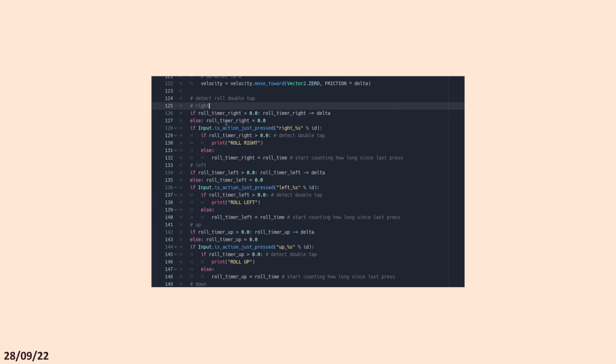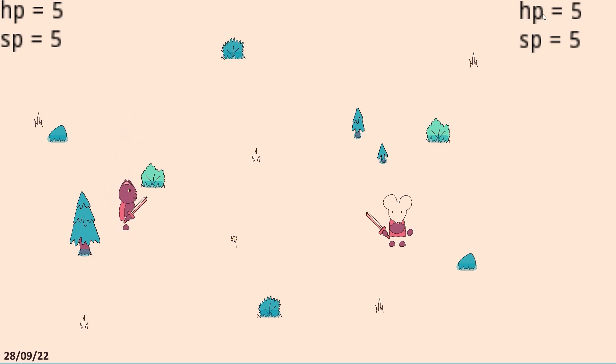I added some code to detect double taps, and implemented a roll state, which plays the roll animation, sets your velocity to a set speed in the roll direction, and makes you invincible for a few frames. I added stamina in much the same way as health, which gets used up to roll and attack, and regenerates over time, and added some acceleration and deceleration to the start and end of a roll, to make it feel a little more natural.